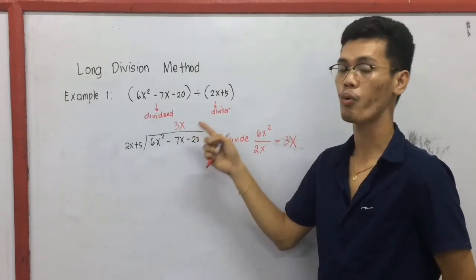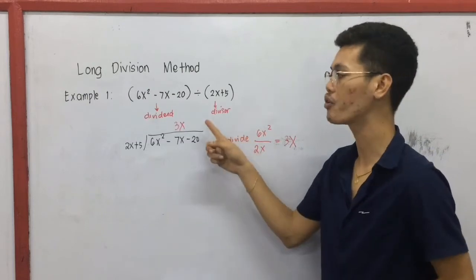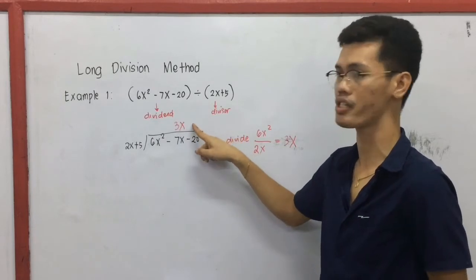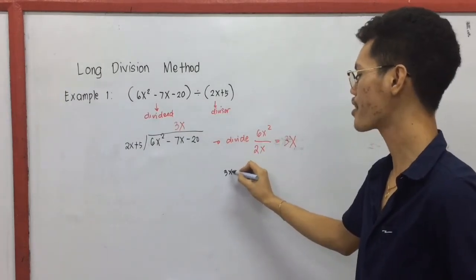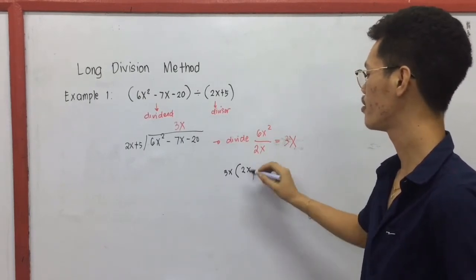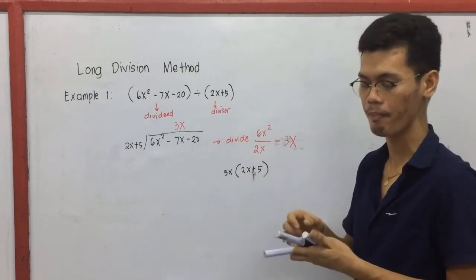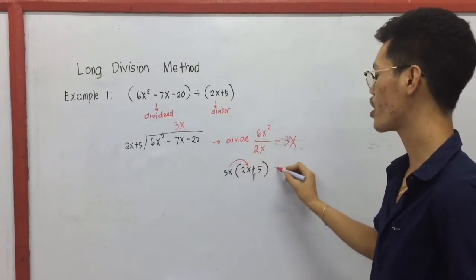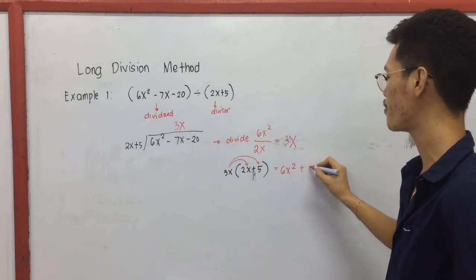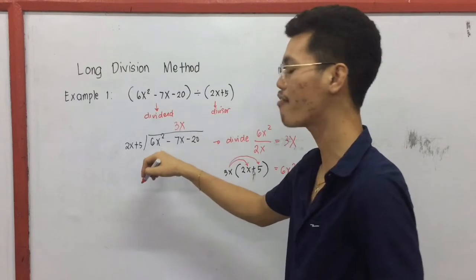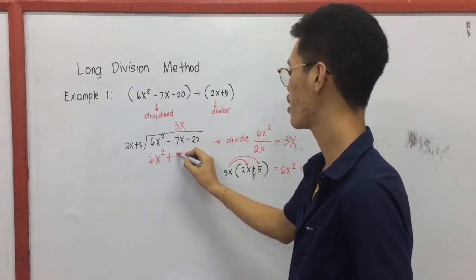After dividing, we proceed to the second step, which is multiply. We multiply the quotient 3x by the divisor 2x plus 5. We are multiplying a monomial by a binomial, so we use the distributive property. Distribute 3x to 2x — that becomes 6x squared. Distribute 3x to positive 5 — that becomes positive 15x. Therefore, we put the product 6x squared plus 15x below the dividend.